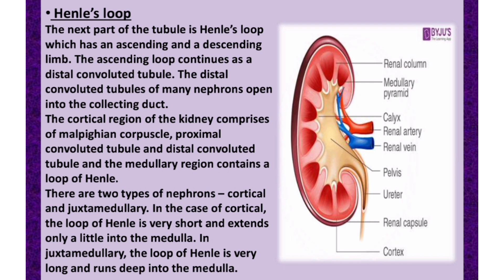The ascending limb continues as the distal convoluted tubule, and many nephrons open into the collecting duct. The cortical region of the kidney comprises the Malpighian corpuscle, proximal convoluted tubule, and distal convoluted tubule. The medullary region contains the loop of Henle. There are two types of nephrons: cortical, where the loop of Henle is very short, and juxtamedullary, where the loop of Henle is very long and runs deep into the medulla.